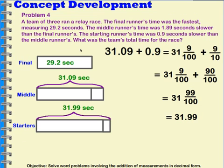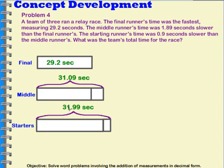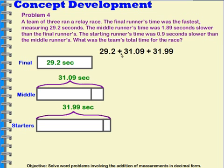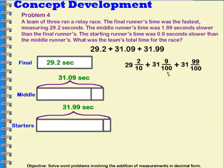Now I have all three of their times. The starter's time was 31 and 99 hundredths seconds. The middle runner's time was 31 and 9 hundredths seconds. And the final runner's time was 29 and 2 tenths seconds. Now I need to add these together. I can think about them first as decimals, but I want to think about them as fractions: 29 and 2 tenths, plus 31 and 9 hundredths, plus 31 and 99 hundredths.